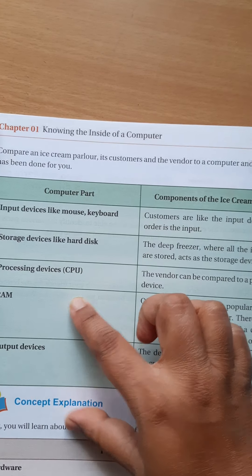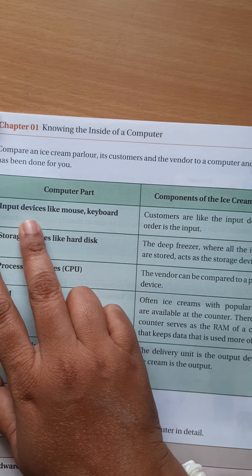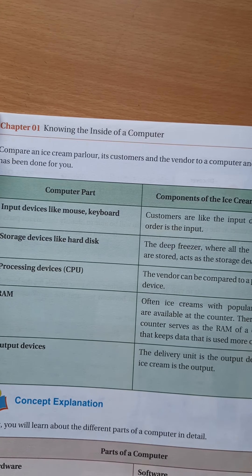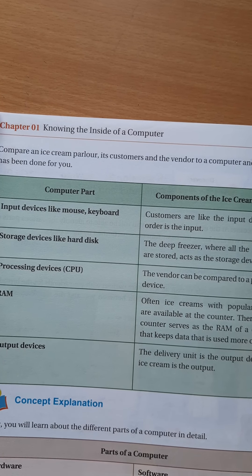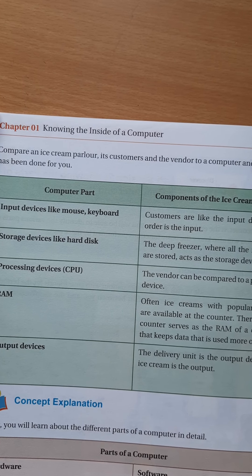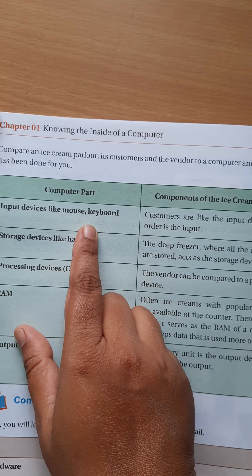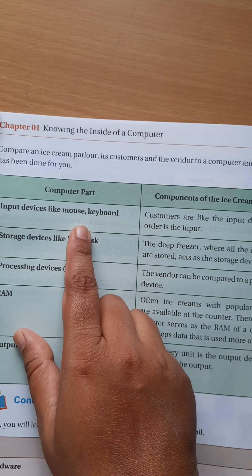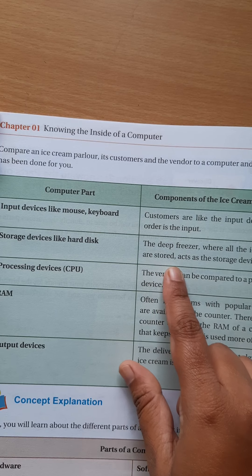In this comparison table, computer parts are in one column and components of the ice cream parlor are in another. Input devices like mouse and keyboard correspond to the customer. Suppose a customer goes to the ice cream parlor and orders vanilla ice cream — that order is the input, just like typing through a keyboard or mouse.